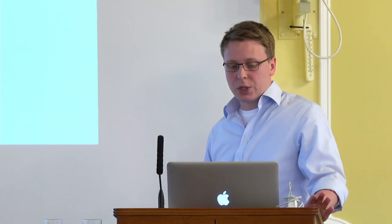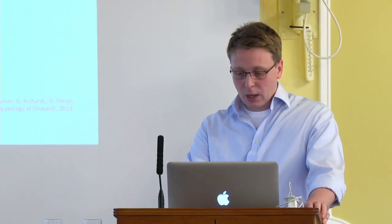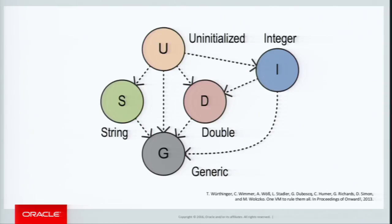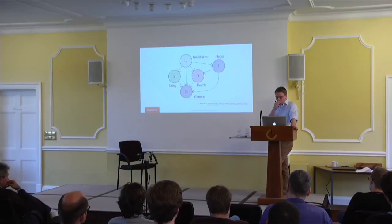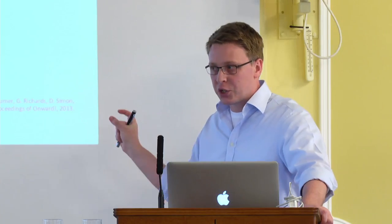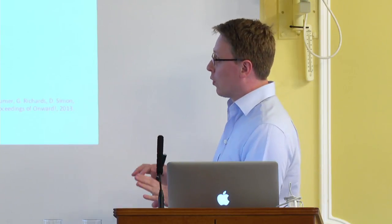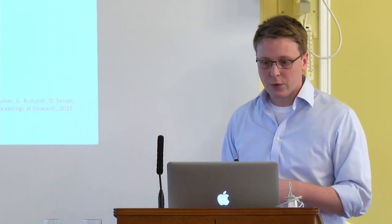Now let's talk about how Truffle solves the problem of optimizing Ruby. The first problem was that JRuby's core library is megamorphic. Truffle's specializing ASTs help us solve this — instead of having one version of each core library method, we can have many different versions handling different types. For add, we have versions handling strings, doubles, integers, or generics, and we choose the most appropriate one. It's like a polymorphic inline cache: if a call site sees two different specializations, it can use one or the other with a guard, or go to the generic.